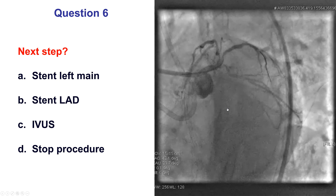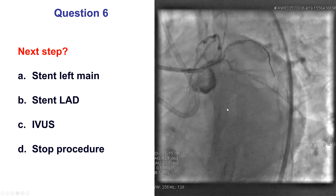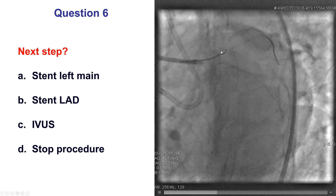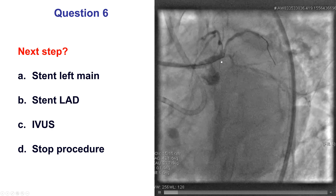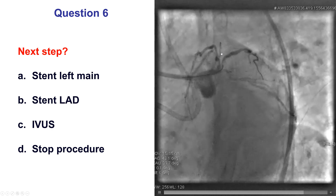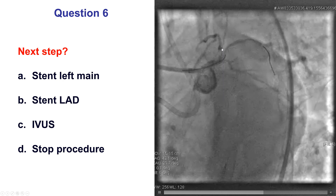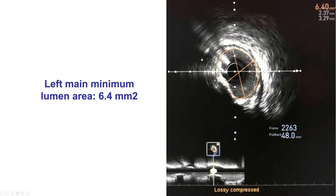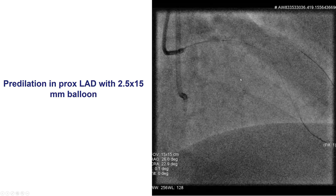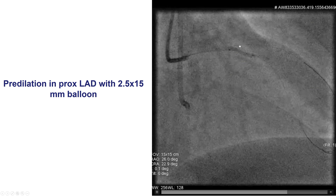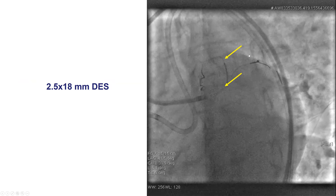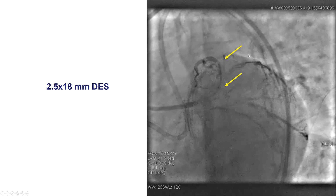So what to do next? Our plan was to switch retrograde, but we knew that the patient had significant disease in the left system and we did not want to advance equipment through that vessel before stenting it. We first did assessment of the left main using intravascular ultrasound. The area was 6.4, so borderline, and we decided to not stent the left main initially. So we predilated the LAD and then stented it with a drug-eluting stent.